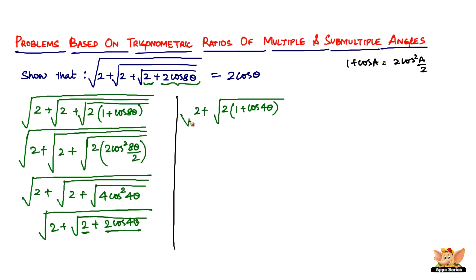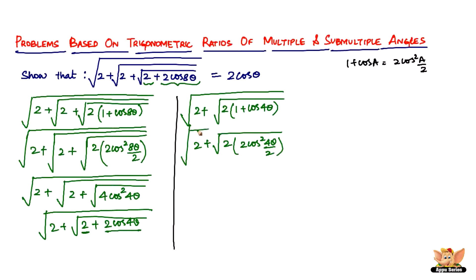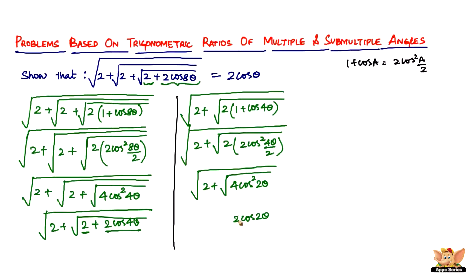Taking out 2 gives 2(1 + cos4θ). Now 1 + cos4θ = 2cos²(4θ/2) = 2cos²2θ. So we have 2 × 2cos²2θ = 4cos²2θ under the square root. The square root of 4cos²2θ: √4 = 2, √(cos²2θ) = cos2θ, so we get 2cos2θ. The expression becomes 2 + 2cos2θ.